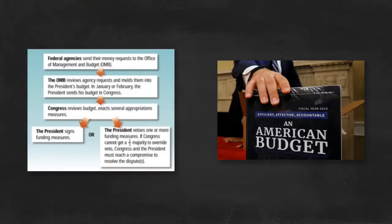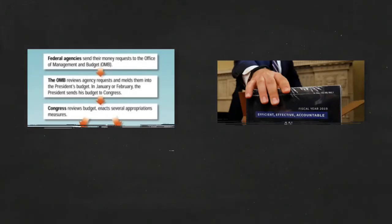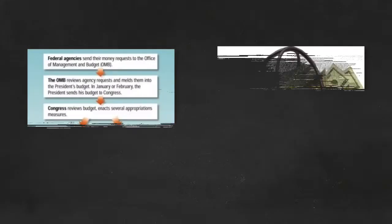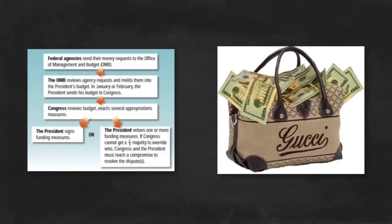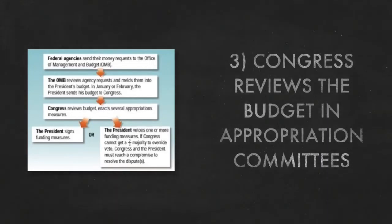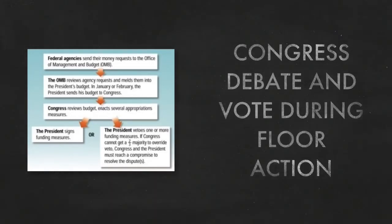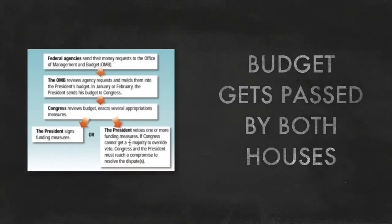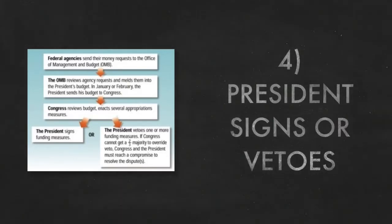Here's the president grabbing the budget and taking it over to Congress. Congress has the power of the purse — the power of the Gucci purse. Congress is going to review this budget through appropriation committees. Congress is going to debate and vote during floor action. The budget must pass through both houses of Congress, then it goes back for the president to sign or veto.